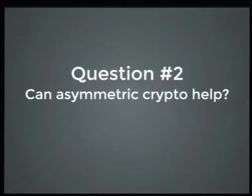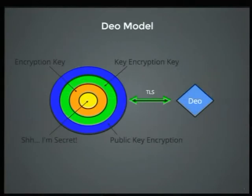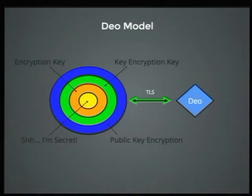Question number two: can asymmetric cryptography help us here? The answer is actually yes. About a year ago, after the last DevConf, in some brainstorming meetings, we came up with a new model. We called this the Deo Project. Deo was Greek for 'I bind.' So binding things together is the idea.